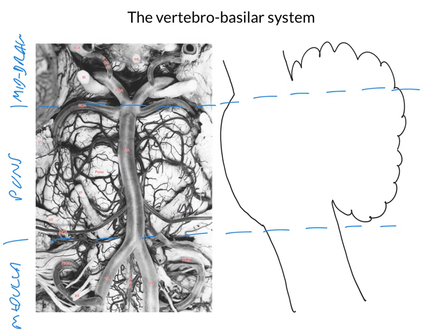We can see the various branches of the vertebral arteries and the basilar artery, and we're going to have a look at how they relate to the lateral view. Let's just remind you very quickly what those different branches are.